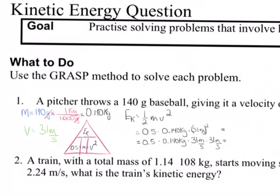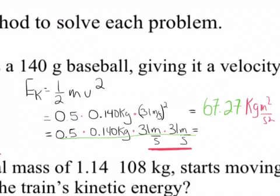So I wrote the formula: E-K is equal to 0.5 mv squared. I did the substitution — 0.5 times 0.140 kilograms times 31 meters per second squared. You'll notice I also separated this out to help you. We get kilogram meters per second squared, and because there are two significant digits in the original question, the answer works out to 67 joules.